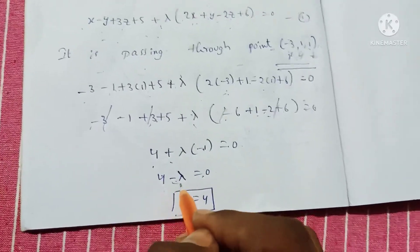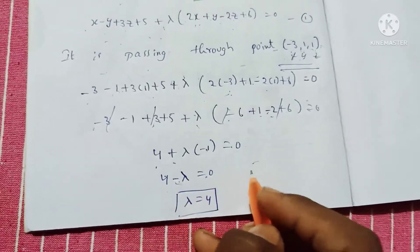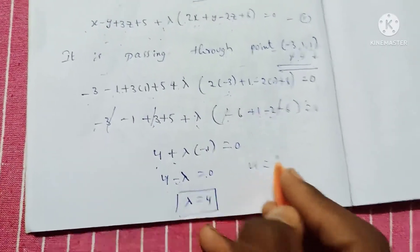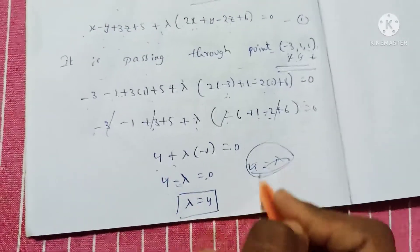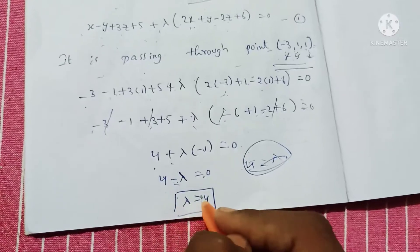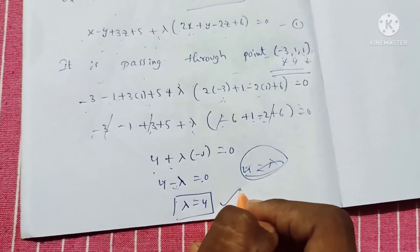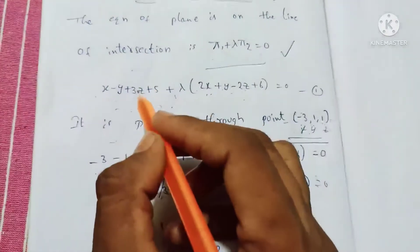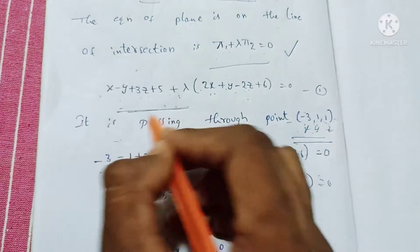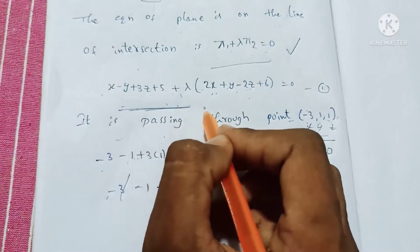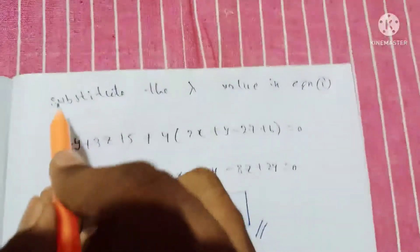Therefore 4 minus λ equals 0, so λ equals 4.